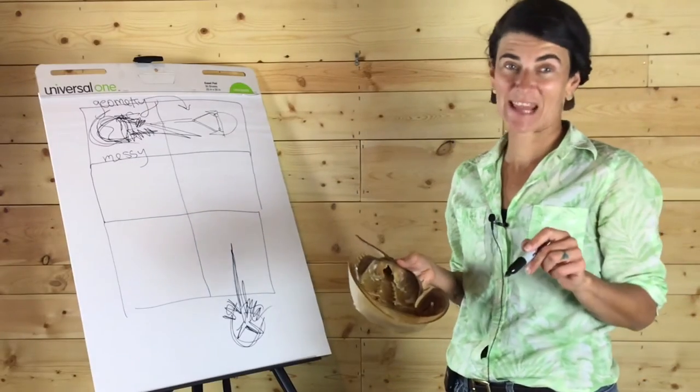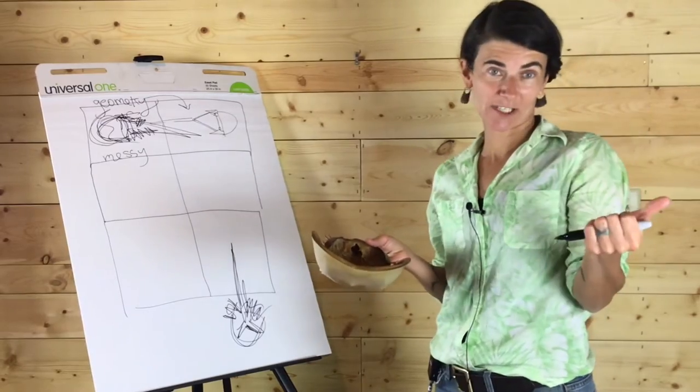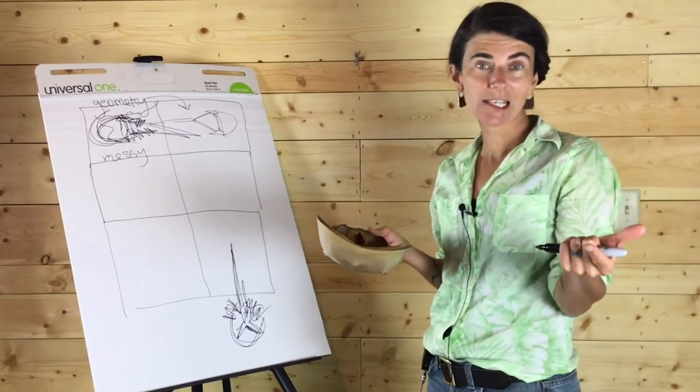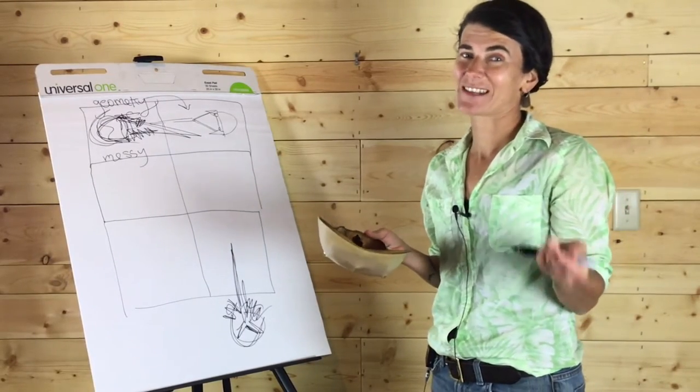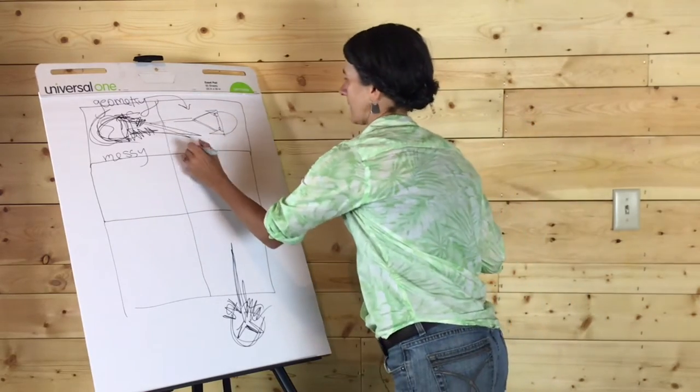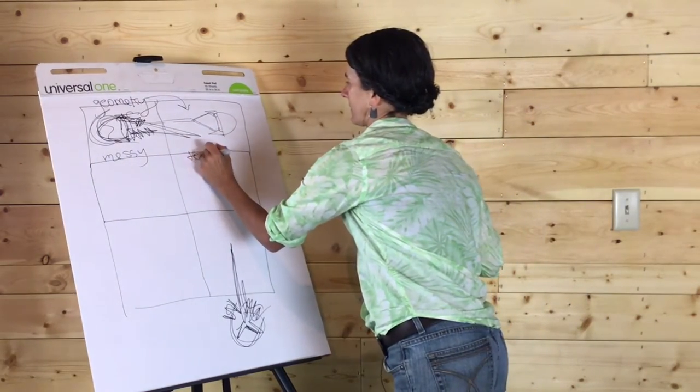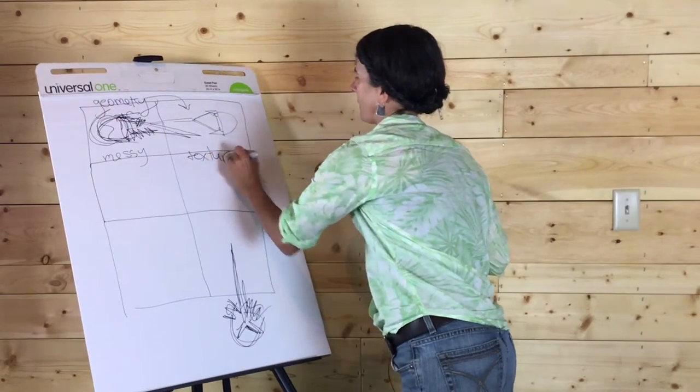All right. Next step. We've got our geometric shapes. We've got our messy sketches. The next thing we're going to look at is texture. So let me write it down.